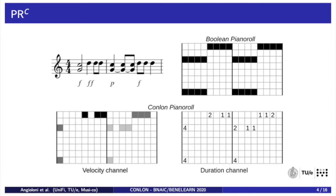Before MIDI data can be fed into a learning algorithm it needs to be arranged in a proper description format. Binary or boolean piano rolls are among the most common representations; however, they are a lossy description of MIDI data in at least two ways. First, they do not include note velocities, which are important for dynamic expression in many musical genres. Second, they make it impossible to distinguish between long notes and repeated occurrences of the same note.